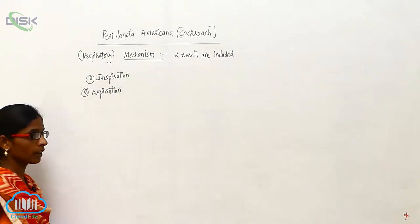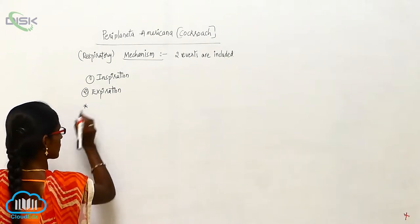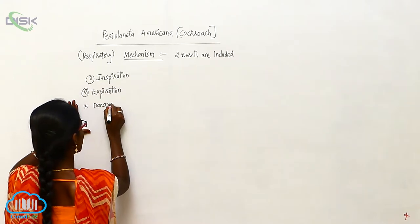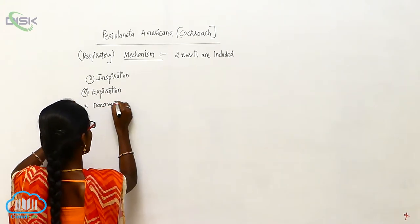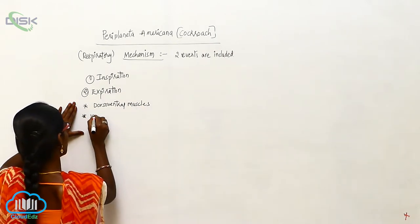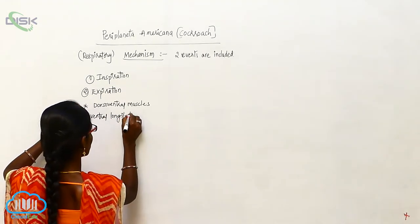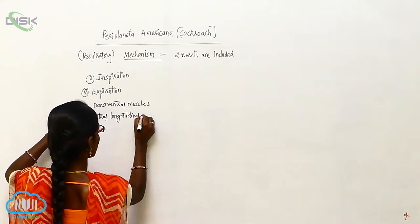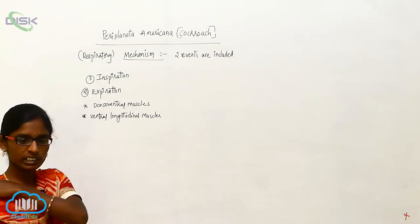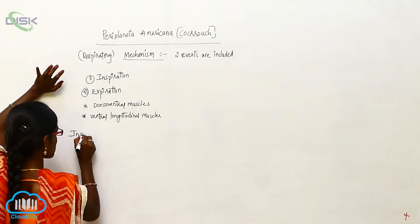In Inspiration and Expiration, two muscles are involved: the Dorsal Ventral Muscle and the Ventral Longitudinal Muscle.